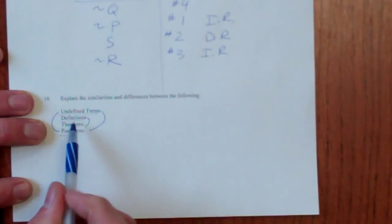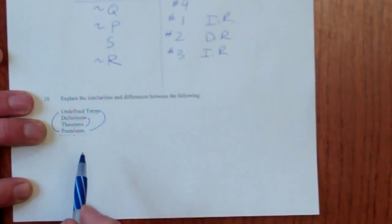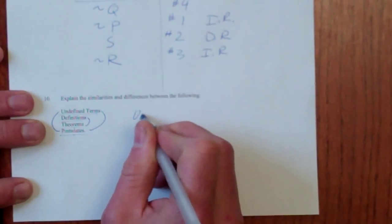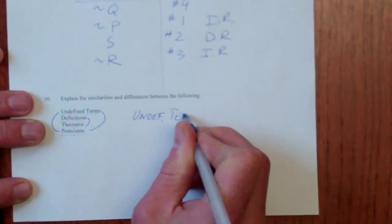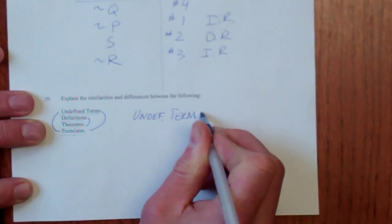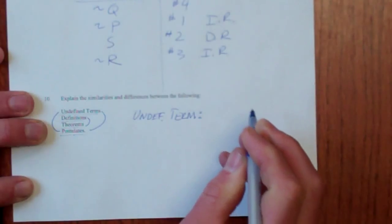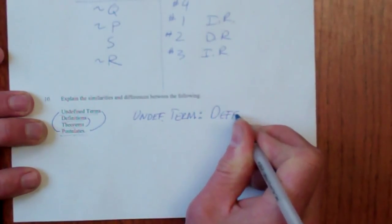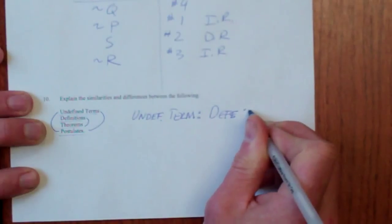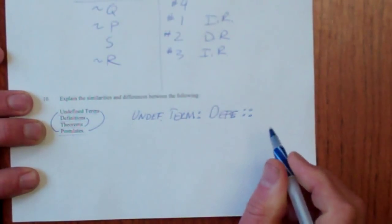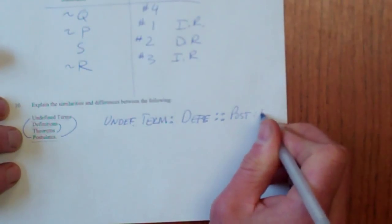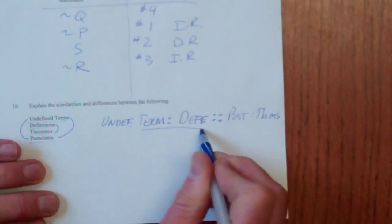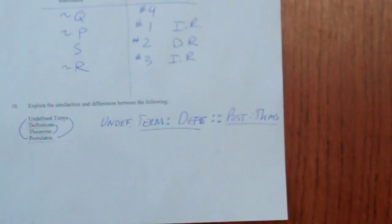Then definitions are built up from defined terms just like theorems are built up from postulates. So you can say undefined terms are to definition, and then I don't know if you've seen this in IQ tests, as postulates are to theorems. Okay, so these have the same relationship as those. Alright, good luck.